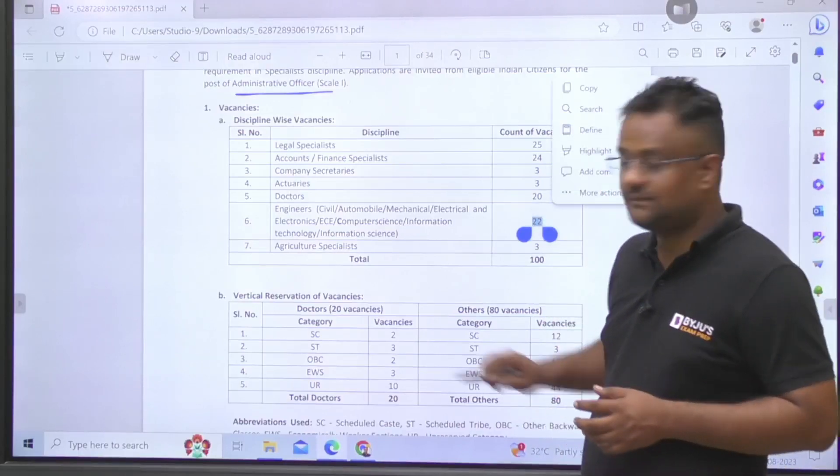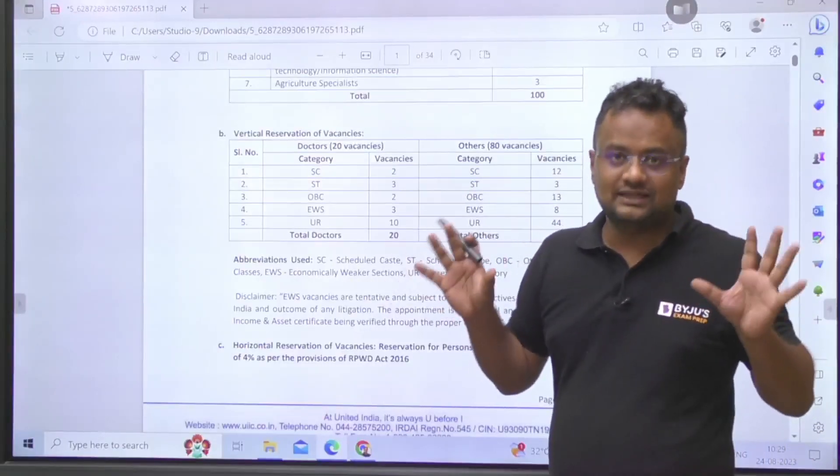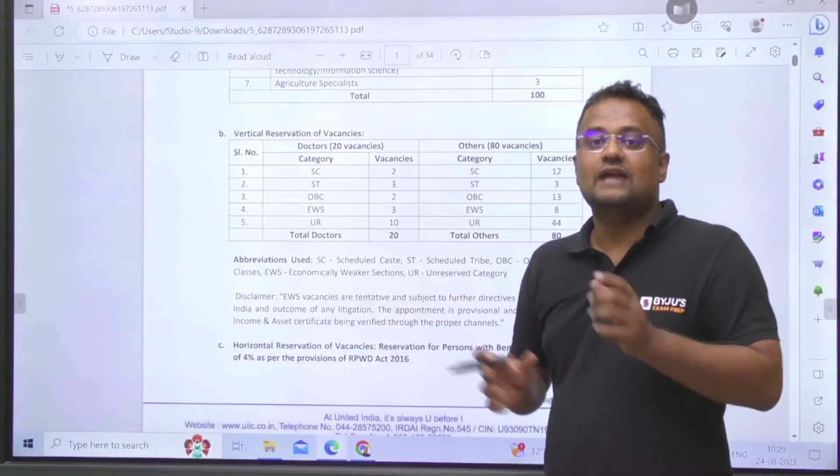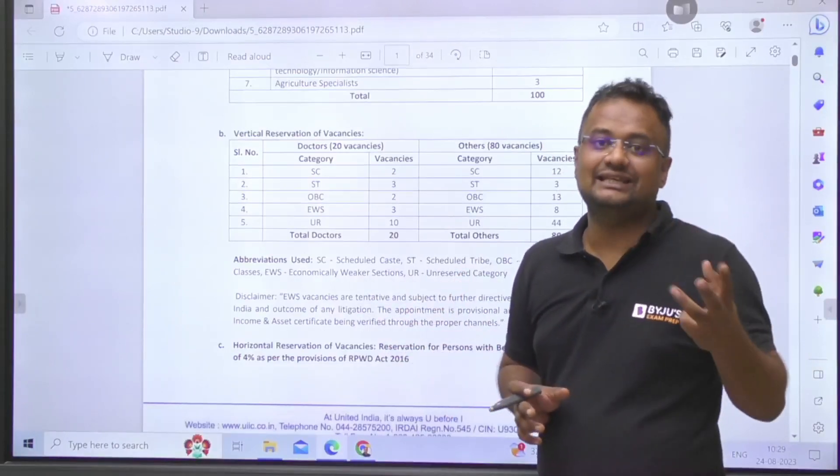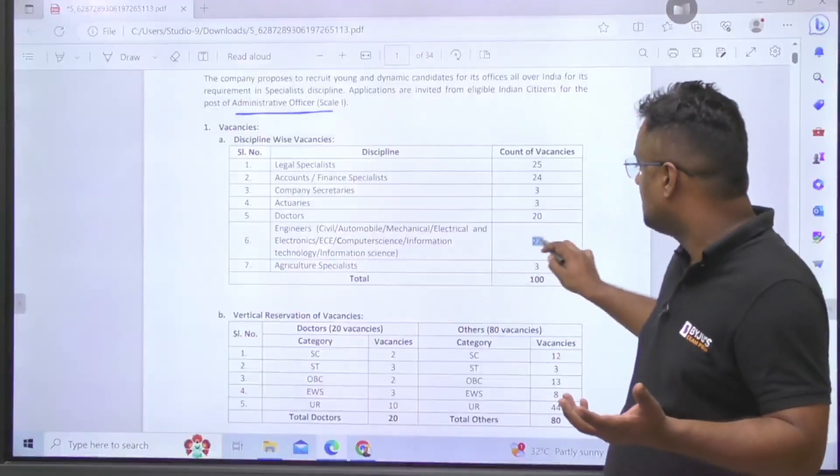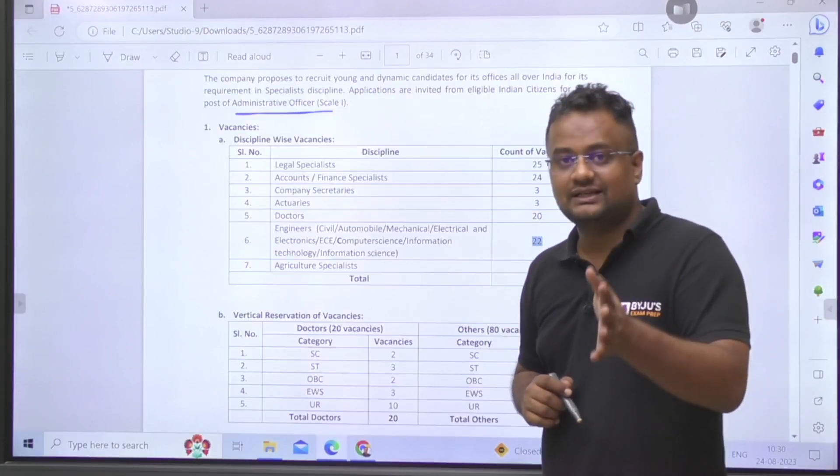The total number of seats are 22 for them and the category bifurcation is like this. Now guys, no GATE score, nothing is required. It will be taking its own exam followed by interview, and for every one seat three candidates will be called. That means if we talk about ourselves, for 22 posts, 66 students will be selected after written test.